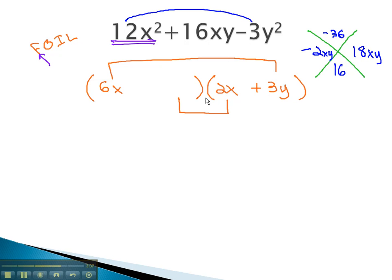In the middle, we have a 2x factored out of the other number, negative 2xy. This must be negative y, and we have our factored solution.